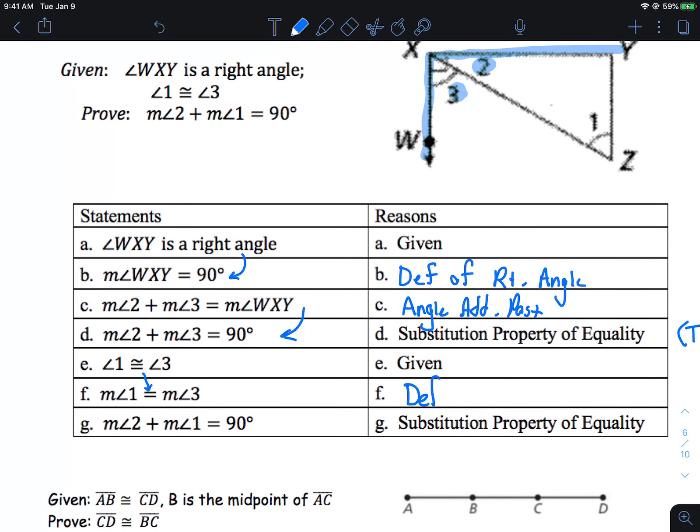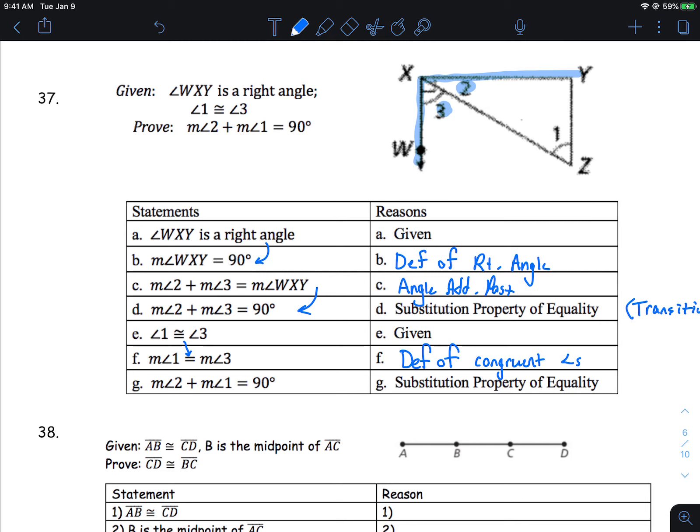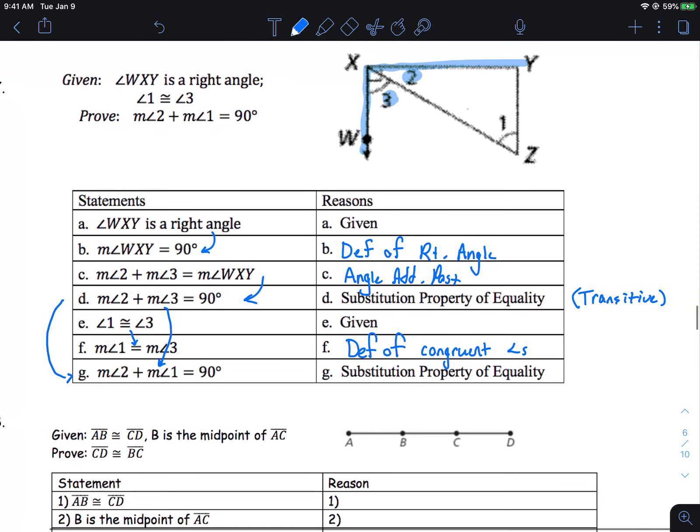If one is congruent to three, then they're also equal. That's a definition of congruent angles. And then finally, if we're going from D to G right here, they're going to say two plus three is 90. Therefore, two plus one is 90. And what's happening is they're swapping out angle three with angle one. And that's actually truly substitution. Substitution is more of when you're just changing one little piece versus transitive property is when a bunch of different things are equal. So that's actually a truly substitution property there. If you put transitive, technically that's not transitive since you're only swapping out one piece. So that's that proof right there.